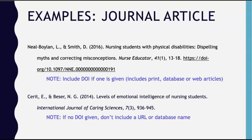After the journal title, followed by a comma, the set of numbers is the volume — 41 — and the issue number — 1 — in parentheses. Notice the italics continues through the volume number, then stops; the issue number is not italicized. Next is a comma and the page numbers, 13 through 18. You do not need to put a 'p' here. The last piece of information is the DOI, which stands for Digital Object Identifier. Most articles have a DOI, and if you're using the library databases, you'll find it in link format. However, if there is no DOI given, you do not need to list a URL. You can end the citation after the page number with a period.